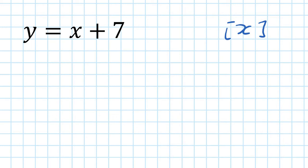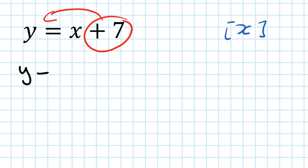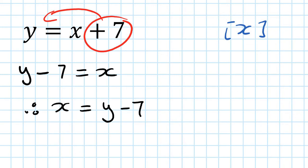Changing the subject of a formula is exactly the same, except when you solve you can find out the numbers, but here you cannot because they're all algebra. So for y = x + 7, you move everything to one side and leave x by itself. Move the 7 to the other side — it becomes minus. So y minus 7 equals x, therefore x equals y minus 7.